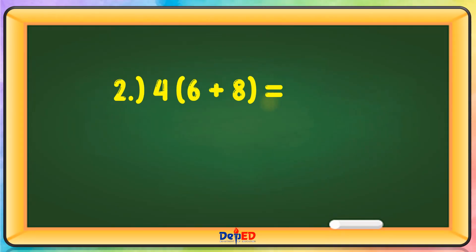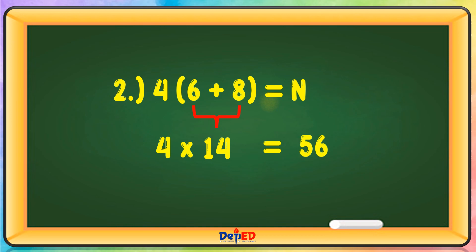Next problem: 4 × (6 + 8) = N. Let us perform the operation inside the parentheses: 6 + 8 = 14. Then 4 × 14 = 56. N is equal to 56.